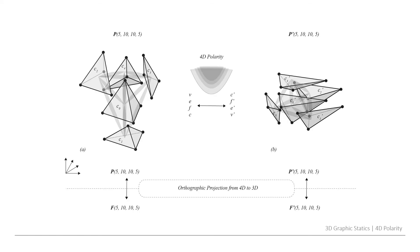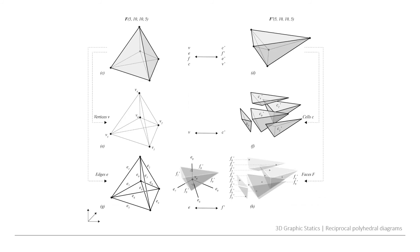Here we see the four polytopic stress functions which are reciprocal through a four dimensional polarity. Then when we have this pair we can just project them down orthogonally from four dimensions. What we get is this pair of polyhedral form and force diagrams where the force diagrams are those Rankine reciprocals. In this case we have a form node corresponding to a force cell and we have a form edge corresponding to a perpendicular face, the surface area of which represents the actual force.